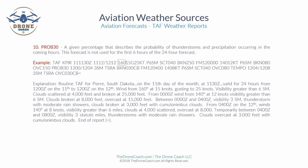Wind from 160 degrees at 15 knots, gusting to 25. Visibility greater than six statute miles. Scattered clouds at 4,000 feet, broken clouds at 25,000 feet.